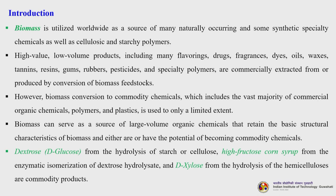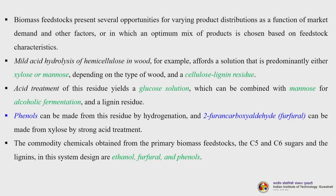However, biomass conversion to commodity chemicals — which includes the vast majority of commercial organic chemicals, polymers and plastics — is used to only a limited extent. Biomass can serve as a source of large volume organic chemicals that retain the basic structural characteristics of biomass and either are or have the potential of becoming commodity chemicals. Biomass feedstocks present several opportunities for varying product distribution as a function of market demand.